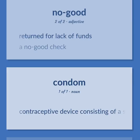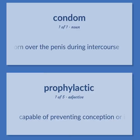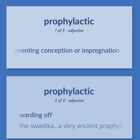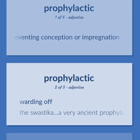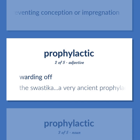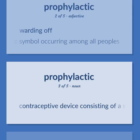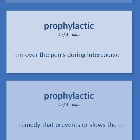Contraceptive device consisting of a sheath of thin rubber or latex that is worn over the penis during intercourse. Capable of preventing conception or impregnation. The swastika, a very ancient prophylactic symbol occurring among all peoples. Contraceptive device consisting of a sheath of thin rubber or latex that is worn over the penis during intercourse.